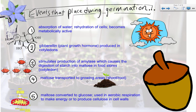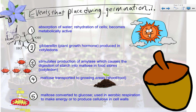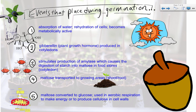Finally, once the maltose reaches the parts where it's needed, it gets converted to glucose and then used in aerobic respiration to make energy, or used in construction of cell walls as part of cellulose. Don't forget that plant cells are also doing cellular respiration. Plant cells, depending on where they're located, can do photosynthesis, but cellular respiration is a common metabolic process that plants share with all other non-photosynthesizing organisms.